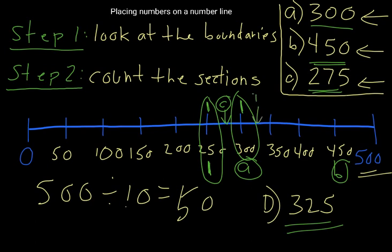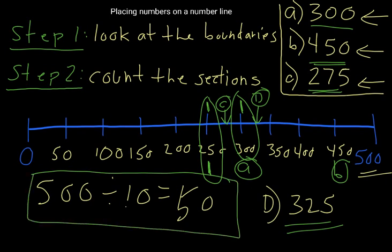I hope this has been helpful for you. The big thing you need to take away from this is you need to be able to work out how much each of these sections is worth. So each of these sections was worth 50, and that's how I worked out what to write for each of these numbers.